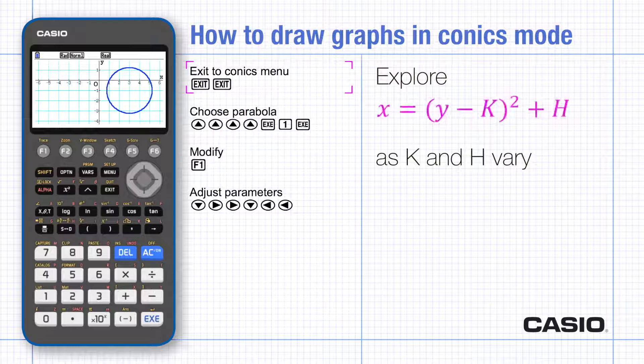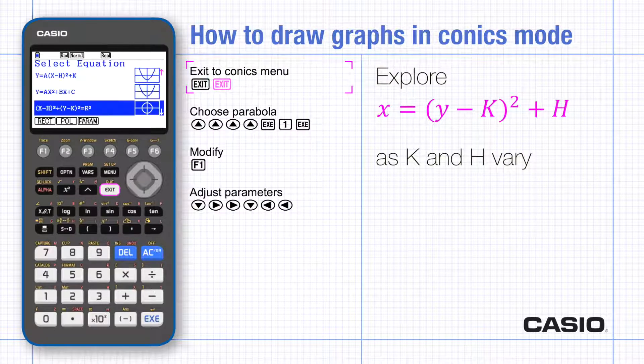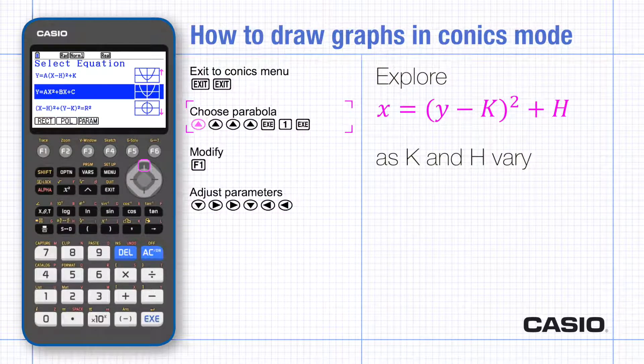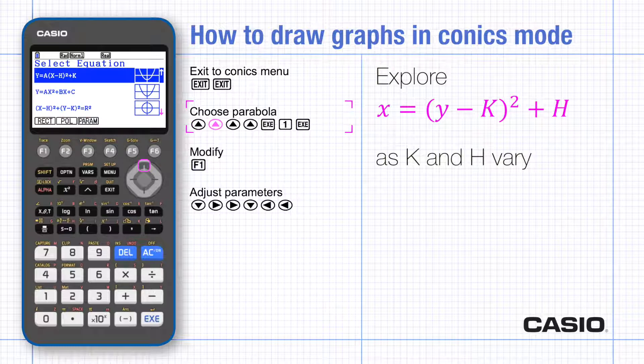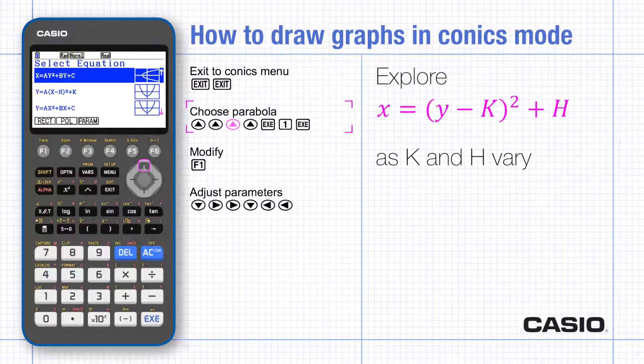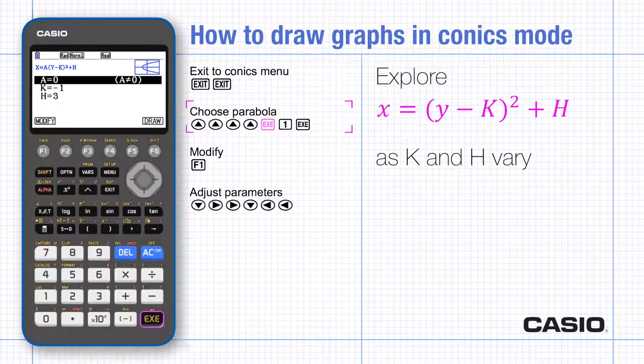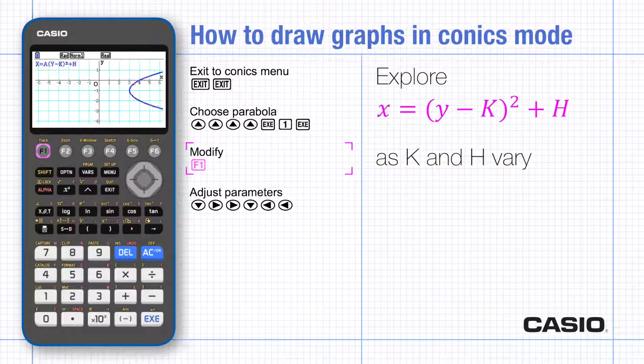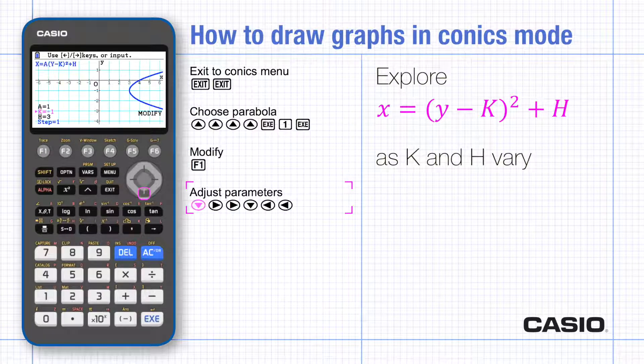Exit to go back through the menus to the main conics menu. Choose parabola and set the value of a to 1. Notice h and k have their previous values. Choose modify, scroll down to select each parameter in turn, and sideways to increase or decrease the value.